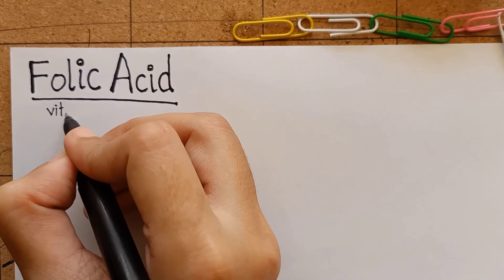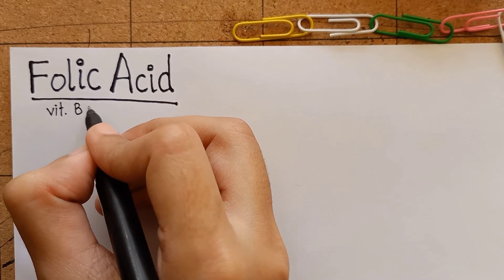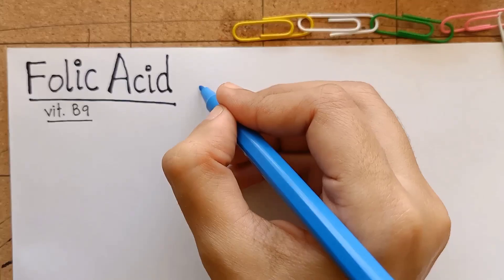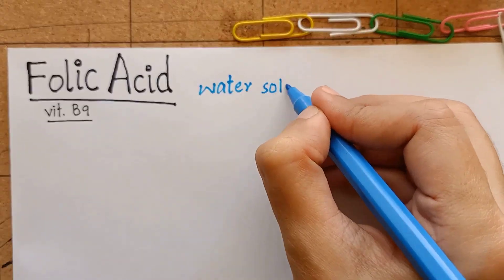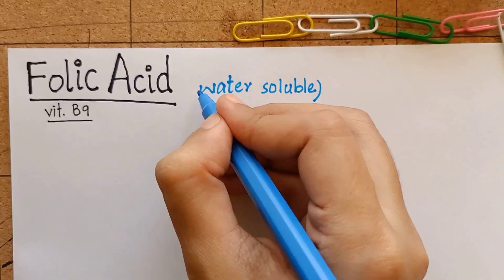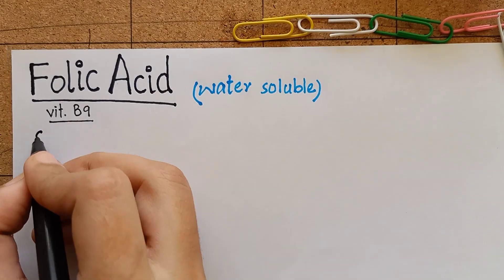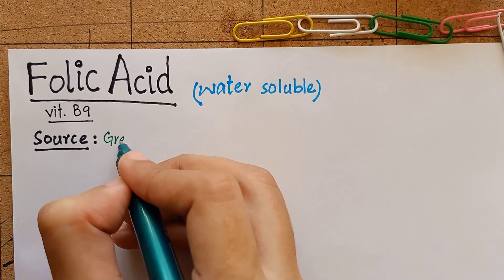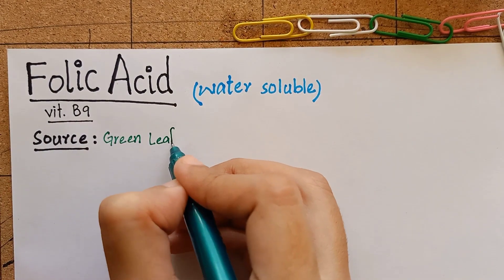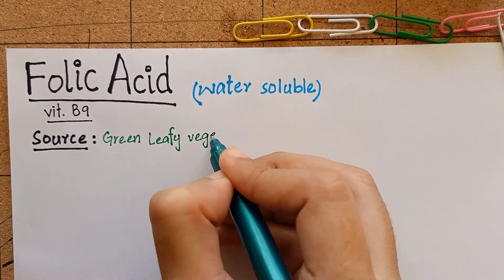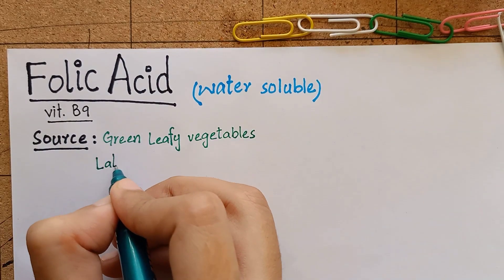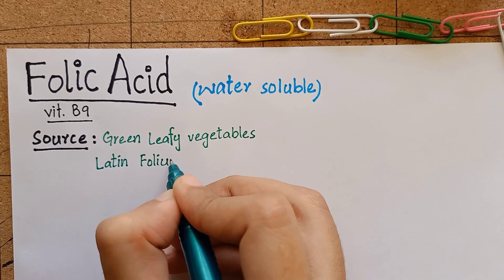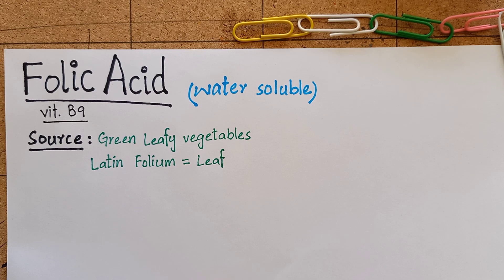We are going to learn about folic acid or vitamin B9. It is a water soluble vitamin. It is abundantly found in green leafy vegetables. The name folic acid is derived from a Latin word folium, that means leaf.